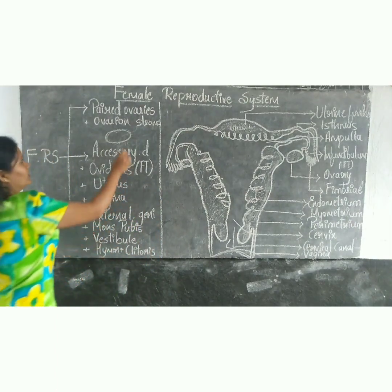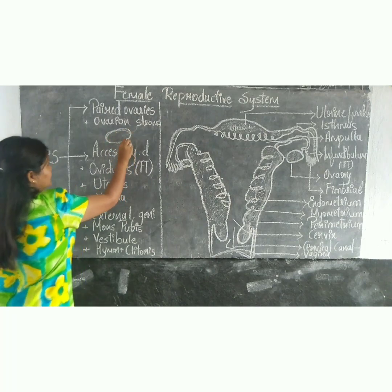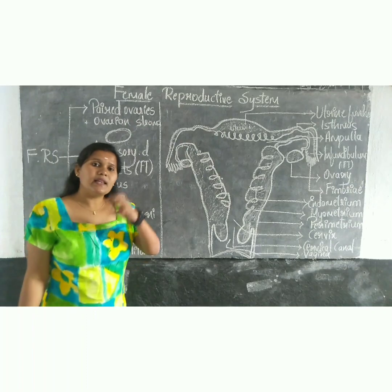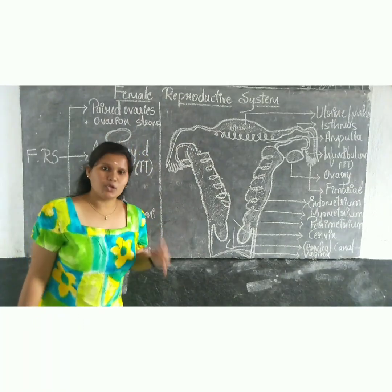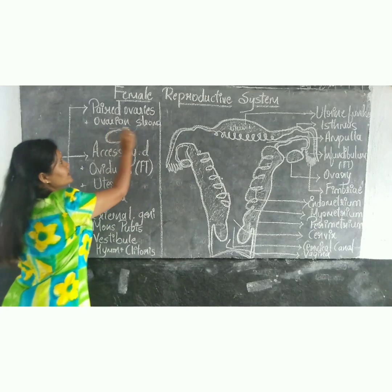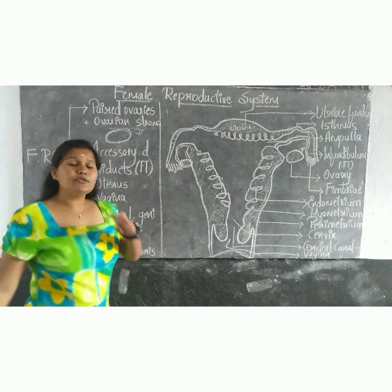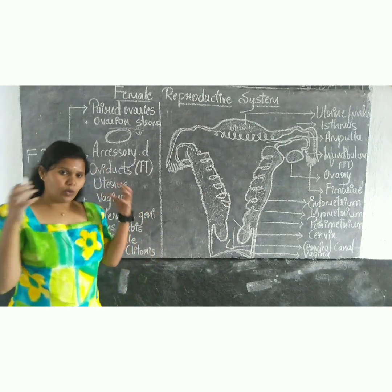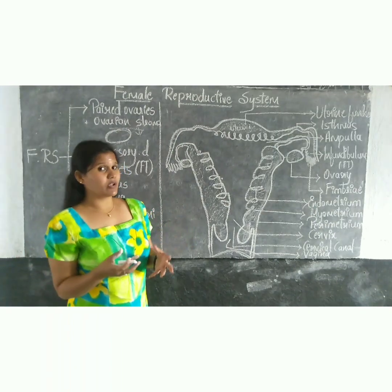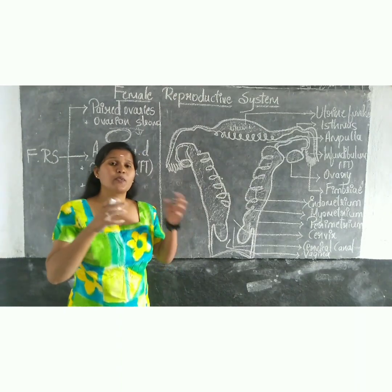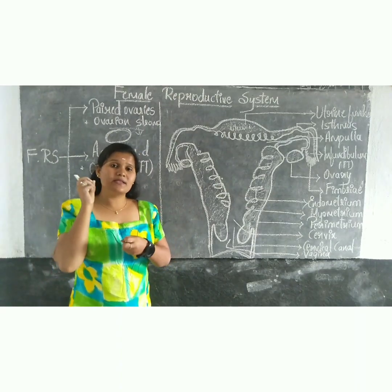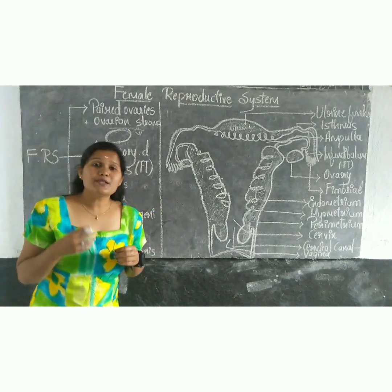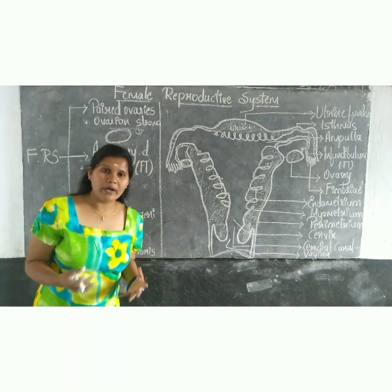The ovary is covered by a thin epithelial layer. The ovarian stroma is divided into two parts: the peripheral cortex and the inner medulla. The ovary contains many blood vessels and follicles, including Graafian follicles, which trigger the production of the ovum.